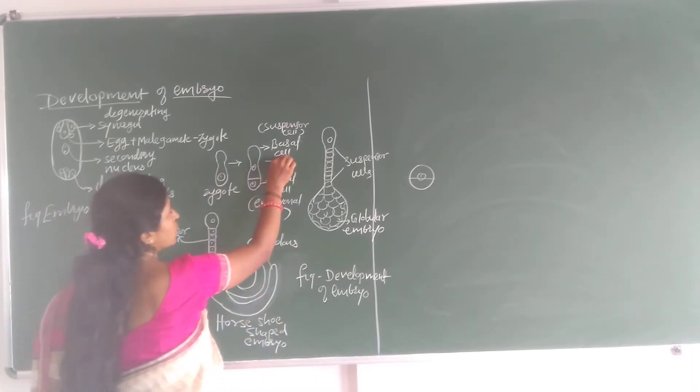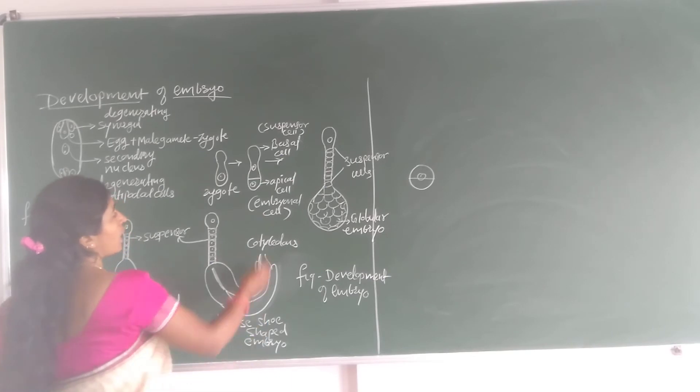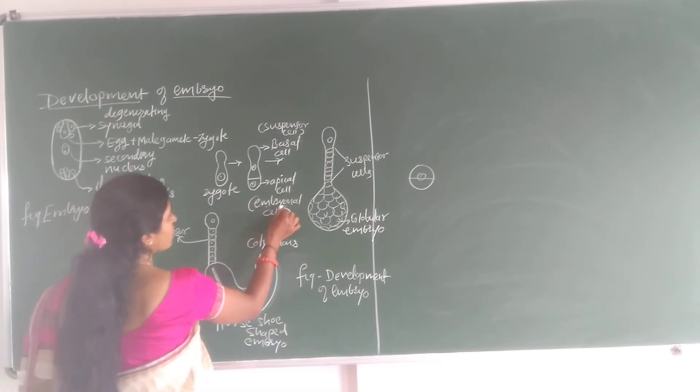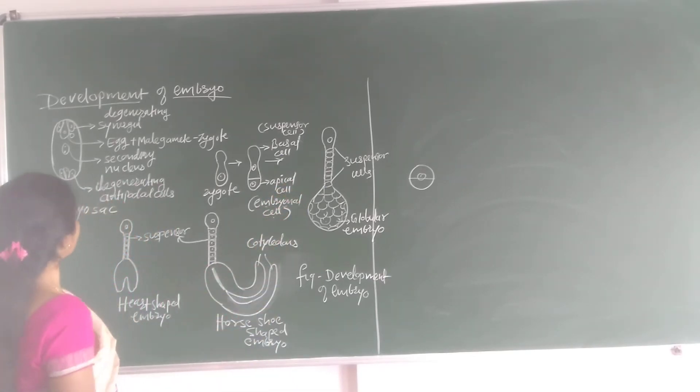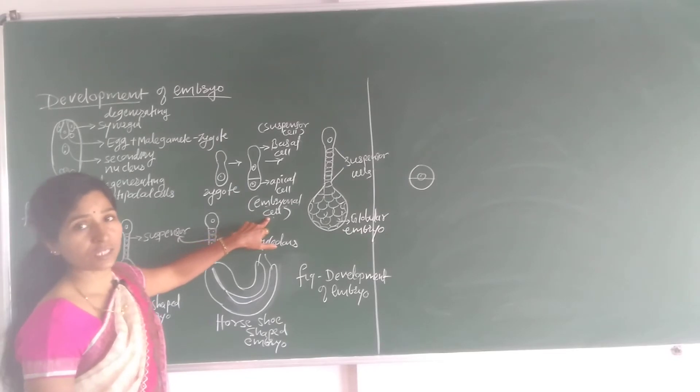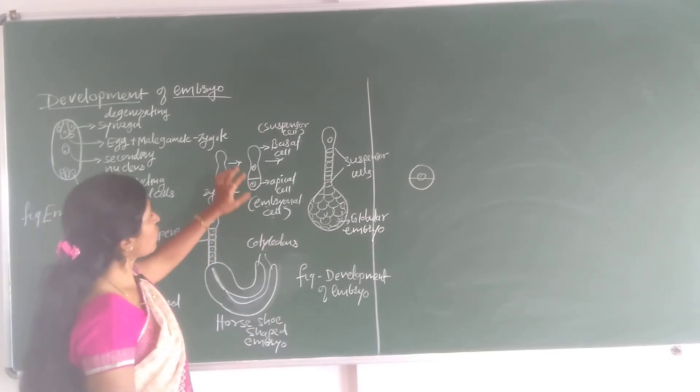Sorry, basal cells present toward the micropylar end. And apical cell or this embryonal cell is present in the interior of embryo sac. Embryo sac interior, where they are called as the embryonal cells. Then later on what happens?